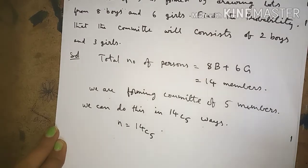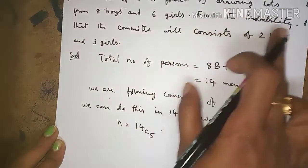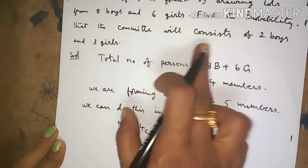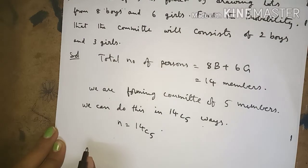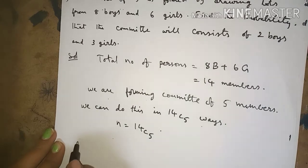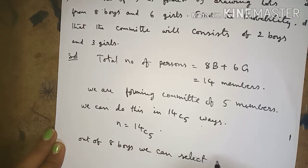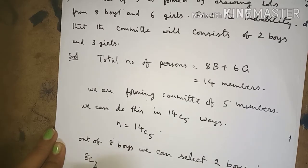Whatever the given problem of probability, first you have to find the denominator — from what we are going to select or choose or form. So n is equal to 14C5. Now we have to find the probability that the committee will consist of two boys and three girls. Out of eight boys, we can select two boys in 8C2 ways.